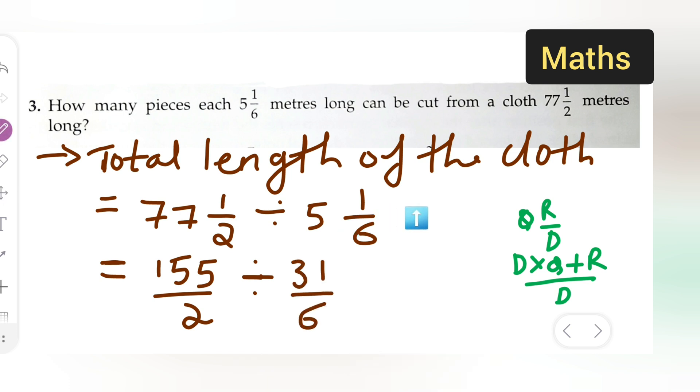Now this will be equal to 155/2 multiplied by the reciprocal of 31/6, which is 6/31. You can cancel this. I hope you have understood what formula we have applied. Then multiply all this and you will get your final answer to be 15 pieces.